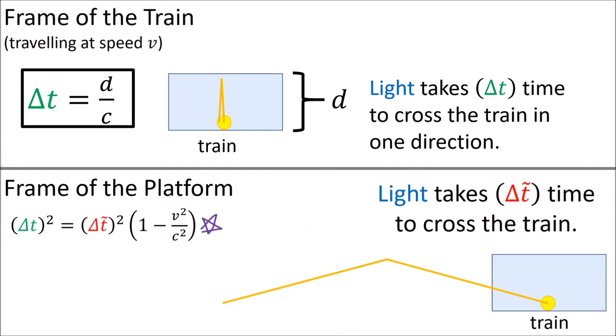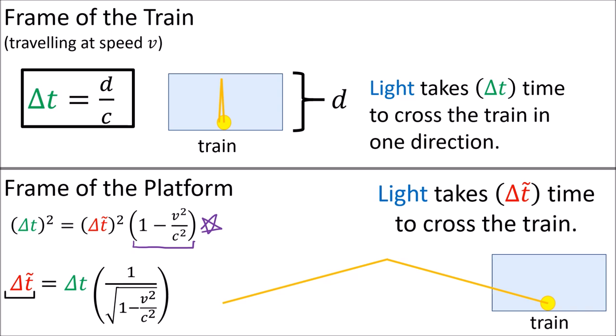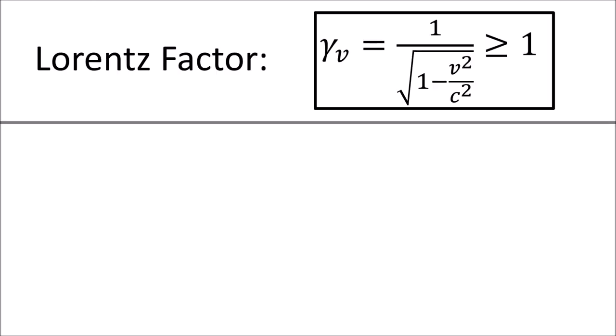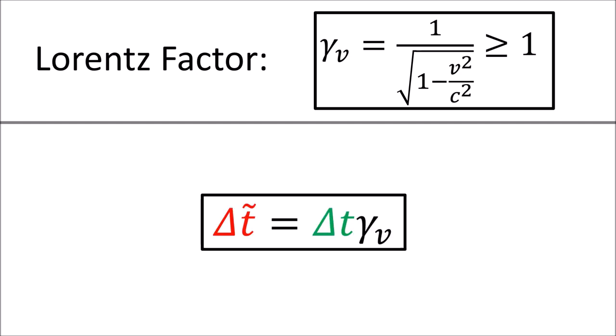Now if we divide both sides of the equation by this term and take the square root of both sides, we get this. We find that the travel time of light in the frame of the platform, delta t tilde, equals the travel time of the light beam in the frame of the train, delta t, times this factor, which we often write as the Greek letter gamma with a subscript v. This factor is called the Lorentz factor, and it is always greater than or equal to the number one. This tells us that delta t tilde is actually greater than delta t, meaning the travel time for the light beam in each reference frame is not equal. So we've discovered this Lorentz factor causes time to be a relative quantity.